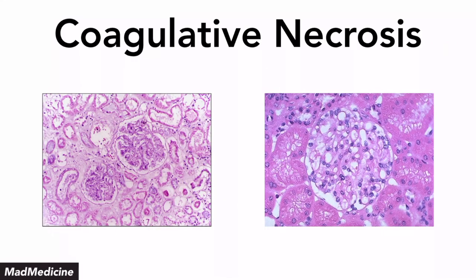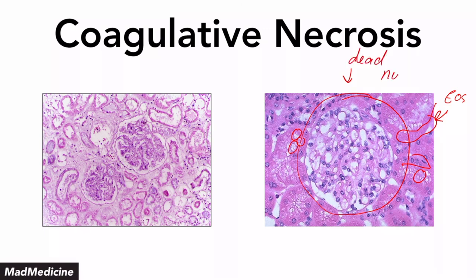This is an example of coagulative necrosis. As you can see in these photos, the nuclei of these cells in the kidneys are not there anymore — some cells have nuclei, but the rest are disappearing. At the same time, you see all this pink material, which is the eosin stain coming out positive. And as you can see, the architecture is still preserved — the glomeruli are still there and look the same; it's just that they are not functioning properly. The cells are already dead because they have no nucleus.